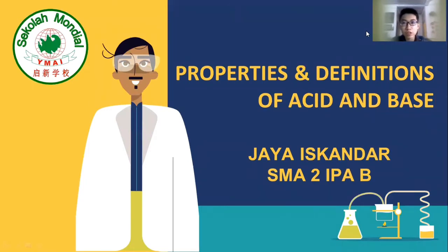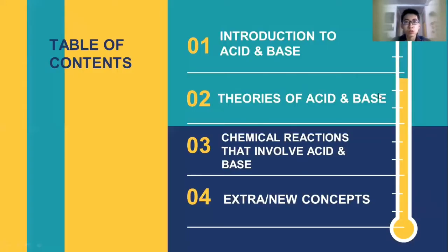Properties and definitions of acid and base. We have a table of contents. The first is introduction to acid and base. The second is the theories of acid and base. Number three is the chemical reactions that involve acid and base. And the last one, I will explain about extra or new concepts.